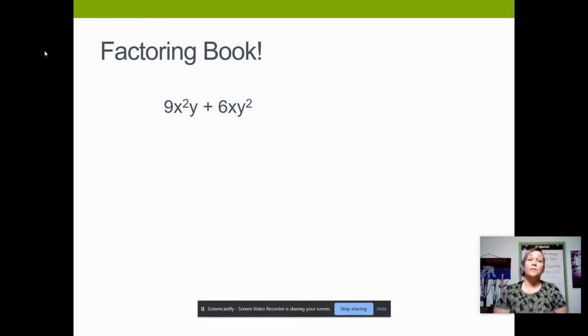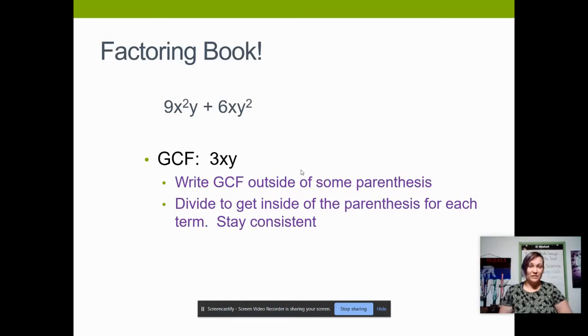So the biggest number that divides evenly into nine and six is three. Both of my terms do share the variables x and y. The smallest exponent on my x is x to the first. It's in that second term right here. And the smallest exponent for my y is y to the first, which is in the first term right here. So my GCF is 3xy. So the GCF is going to be part of your answer, and you're going to write it in front of some parentheses.